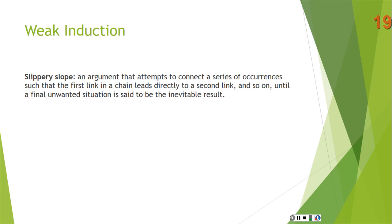Now we need to look at slippery slope. This is an argument that attempts to connect a series of occurrences such that the first link in a chain leads directly to a second, and so on, until a final unwanted situation is said to be the inevitable result. Examples include: 'Don't legalize marijuana, because then we're going to end up legalizing crack,' or 'Don't use marijuana, because you'll end up as a crackhead.' These are all examples of the slippery slope argument.